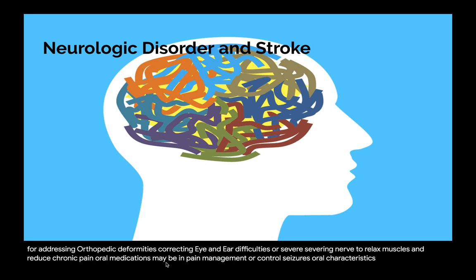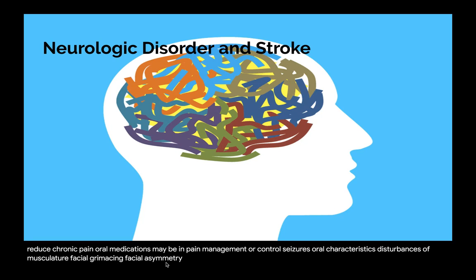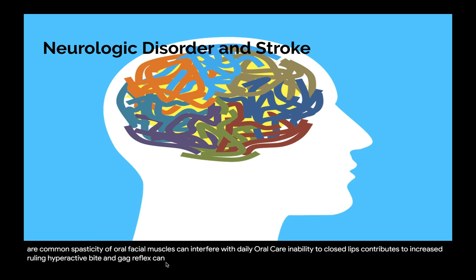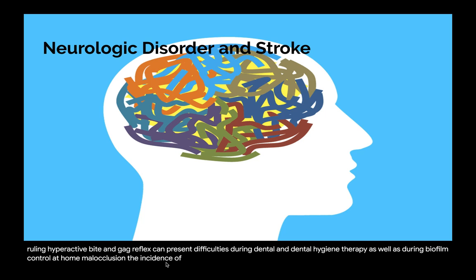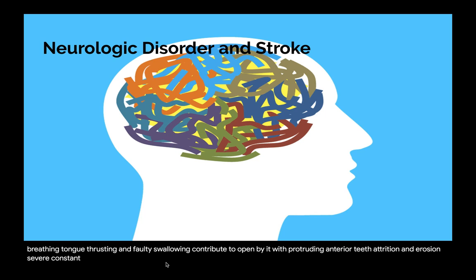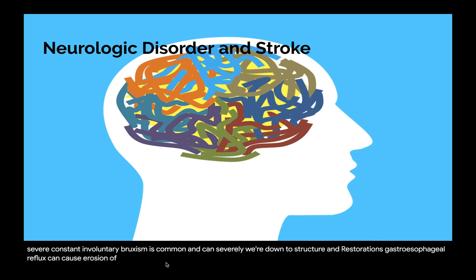Oral characteristics include disturbances of musculature — facial grimacing, facial asymmetry, and abnormal function of the muscles of mastication, swallowing, and speech are common. Spasticity of oral-facial muscles can interfere with daily oral care. Inability to close lips contributes to increased drooling. Hyperactive bite and gag reflex can present difficulties during dental hygiene therapy and at home. Malocclusion is common, often a musculoskeletal abnormality rather than only misaligned teeth. Severe, constant bruxism can severely wear down tooth structure and restorations. Gastroesophageal reflux can cause erosion of oral tissues, and patients may fall frequently, which can damage and fracture teeth and jaws.